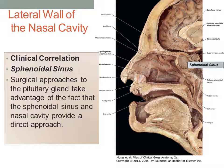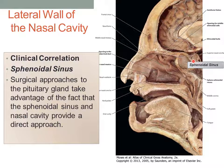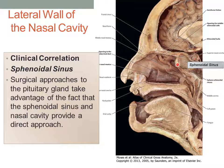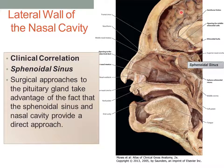Here's another review slide. On a side note, the sphenoid sinus is quite useful because if you need to approach the pituitary gland — for instance, if there's a pituitary tumor — you can take advantage of the fact that the sinus is accessible all the way through the nasal cavity. So instead of having to do massive invasive brain surgery through the calvaria, you can actually take an approach through the nasal cavity and through the sphenoidal sinus directly to the pituitary gland.